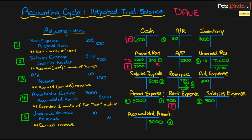Moving to the second adjustment, we have salaries expense with no other adjustments, so that is the final balance. Salaries payable is a new account that we had to create, and that is its final balance as well. Next, we have accrued revenue — accounts receivable was increased by $100 as a debit entry, giving it a debit balance of $100. Revenue was adjusted by $100 as a credit, which was added to the original $2,500 balance. We'll see a later adjustment in the fifth entry as well.